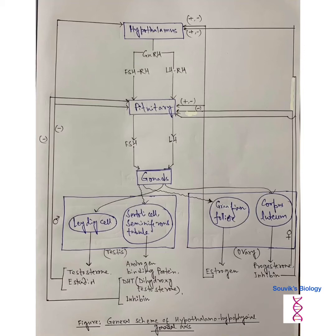First, hypothalamus releases GnRH or gonadotropin releasing hormone, that releases two hormones: FSHRH and LHRH, or follicle stimulating hormone releasing hormone and luteinizing hormone releasing hormone. These two hormones work on pituitary gland, and FSH and LH from anterior pituitary—follicle stimulating hormone and luteinizing hormone—they act on gonads.